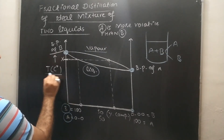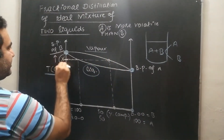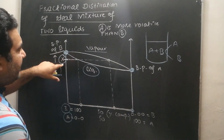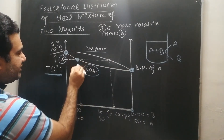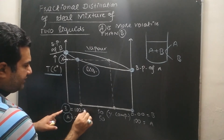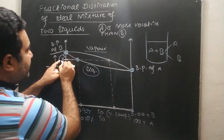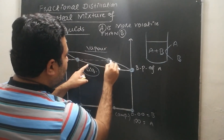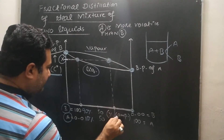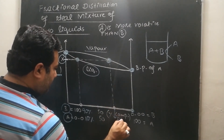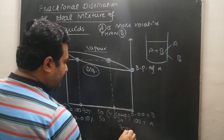On the Y-axis we have temperature in degrees Celsius. Now listen carefully: we have selected a temperature X. At temperature X, when we heat this mixture, the composition in the liquid state will be approximately 90% B and 10% A. But at the same temperature X, the composition in the vapor form of that solution will be approximately 30% B and 70% A.